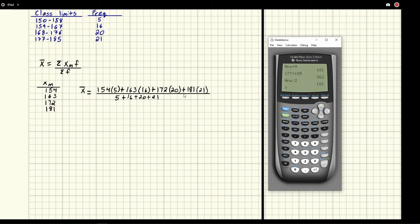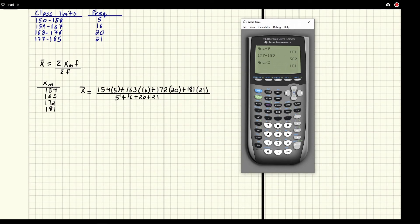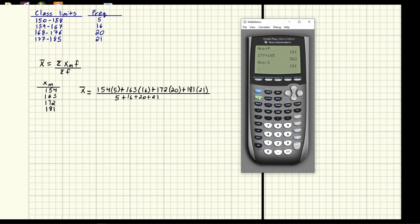So okay now we're going to put this in the calculator. So this is a pretty complex expression. I'm going to use the fraction abilities of the calculator. So we're going to hit the green key and then go to f1. Gives us the ability to type a fraction. So again we're going to do 154 times 5. Just write it exactly how it looks. No need to make it more complicated than it is. 154 times 5 plus 163 times 16 plus 172 times 20 plus 181 times 21.